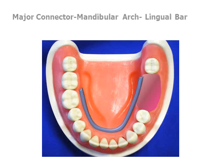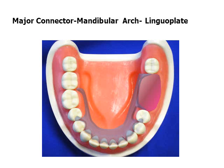The two most commonly used major connectors in the mandible are the lingual bar and the lingual plate. The bar requires approximately 8 mm between the free gingival margin and the elevated floor of the mouth. The lingual plate is useful if anterior tooth loss is to be anticipated and may be interrupted for aesthetics. The lingual plate may also be employed in the presence of lingual torii by running the plate superior to the torus.